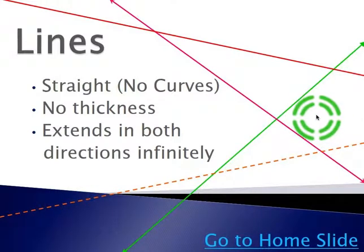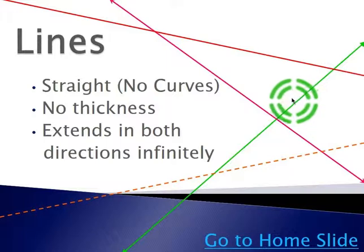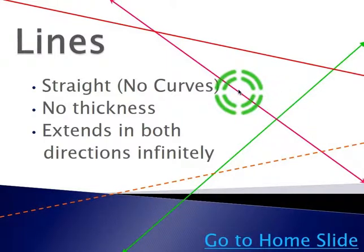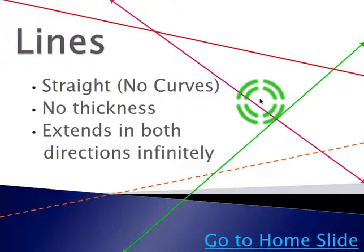Now the next type of geometry that we're going to talk about are lines. It is important to note that lines must be straight, there are no curves, they have no thickness, and they extend in both directions infinitely.